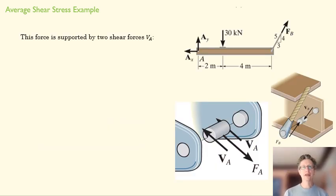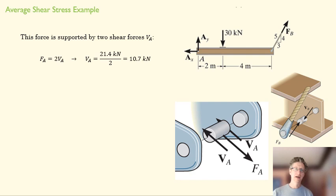Now that's supported by two shear forces, just like we saw on that early example. So we know this, we know the force that the pin is supporting. And so finding the shear force is a matter of figuring out, first of all, what is each section here supporting? Each section is supporting half of that force, or reacting to half of that force. So VA is going to be 10.7 kN.